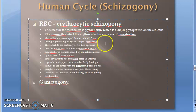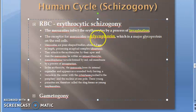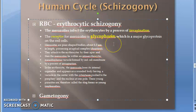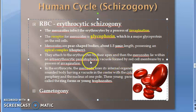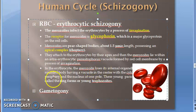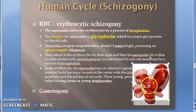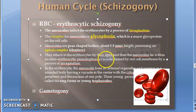Now we move to erythrocytic schizogony. The key term here is invagination — merozoites infect the erythrocyte by a process called invagination. There is a receptor on the RBC called glycophorin, which the merozoites use to enter. They have an apical complex, attach to the erythrocyte by their apex, and lie within the intraerythrocytic parasitophorous vacuole formed by the red cell membrane.